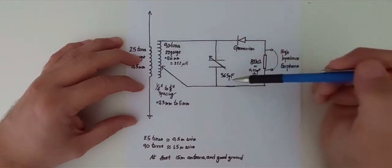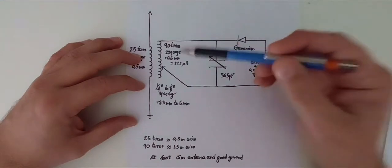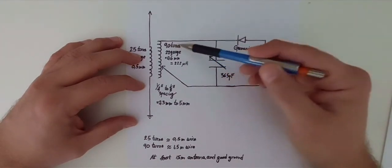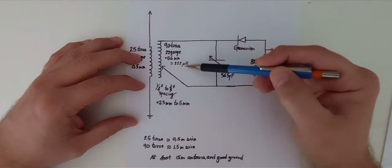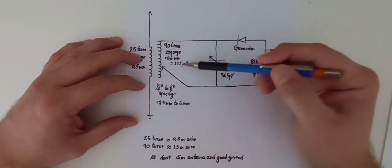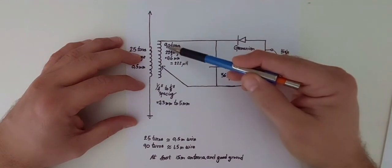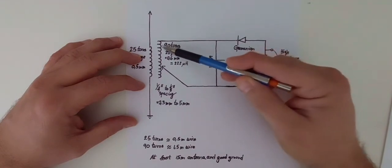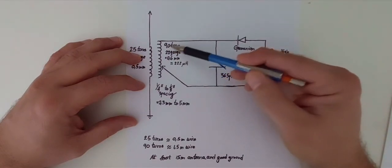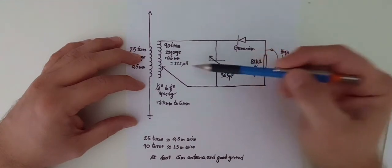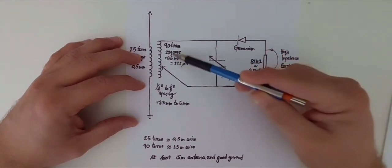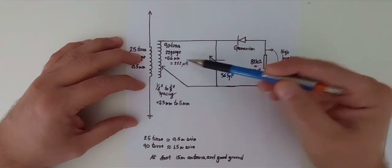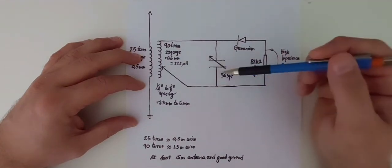The original schematics reported value for the variable capacitor of 365 picofarad and 90 turns for the coil. But 90 turns, picofarad, these are completely different dimensions. I worked out the 222 microhenry value for the coil. I didn't have to. I wanted to. It's quite alright to follow the schematics, wind 90 times. But this left me curious.